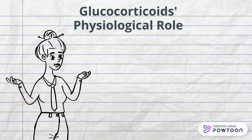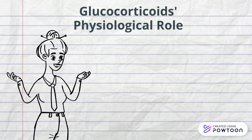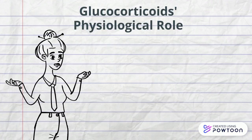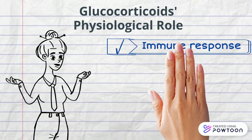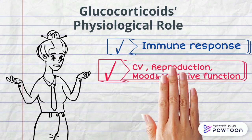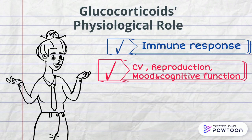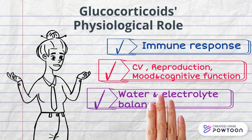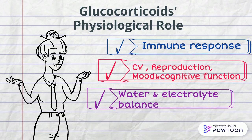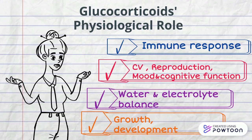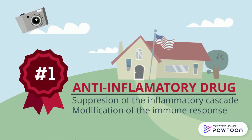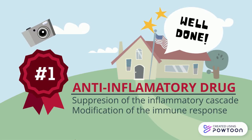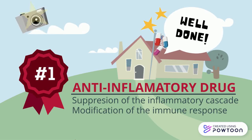Glucocorticoids are steroid hormones secreted by our adrenal glands. They are involved in major processes in our body like immune response, cardiovascular reproduction, mood and cognitive function, water and electrolyte balance, and growth and development. They are one of the most efficient anti-inflammatory drugs, acting as immunosuppressants and immunomodulators.